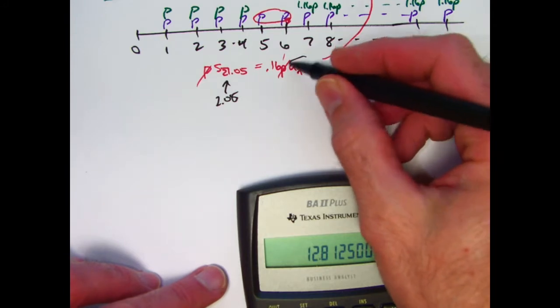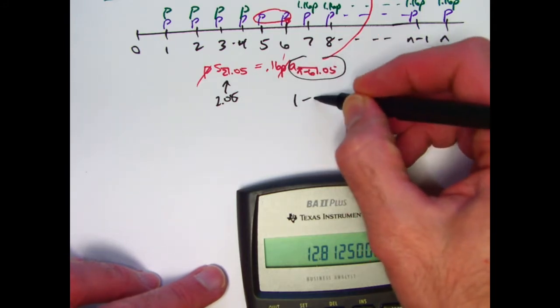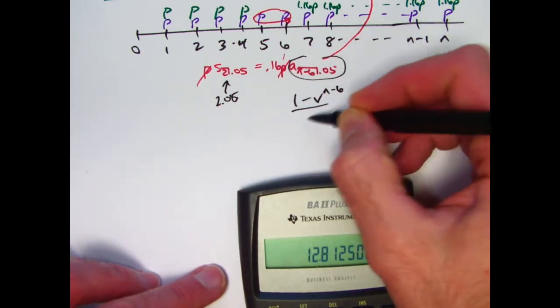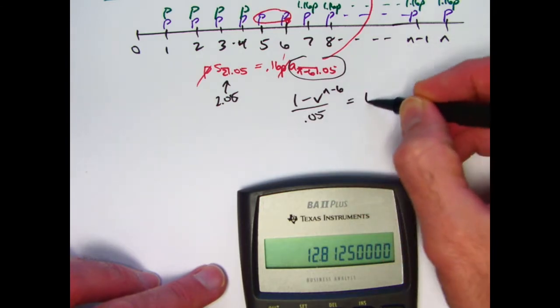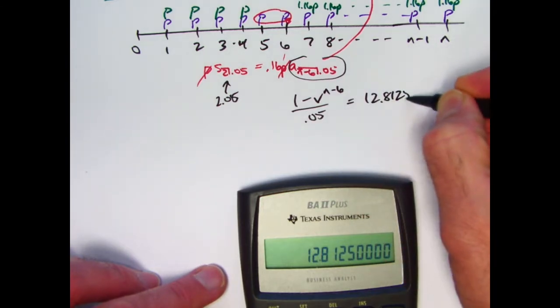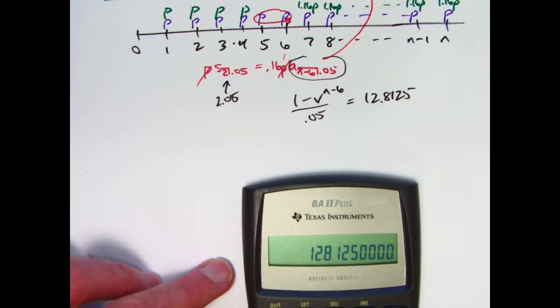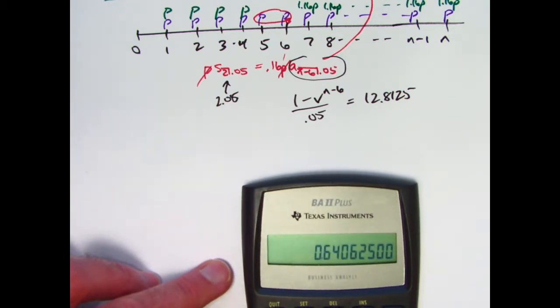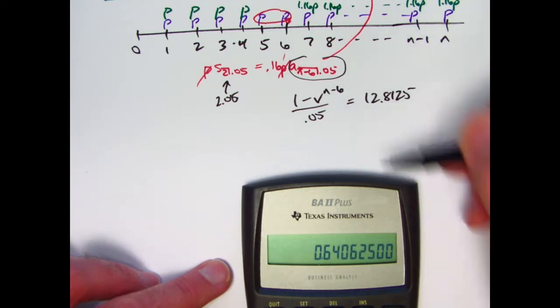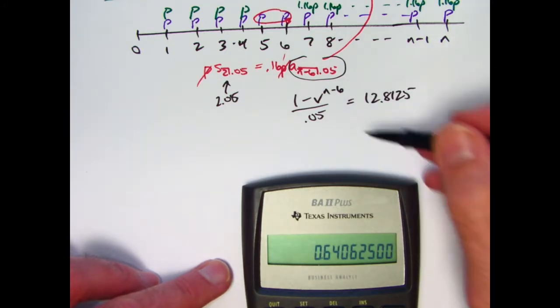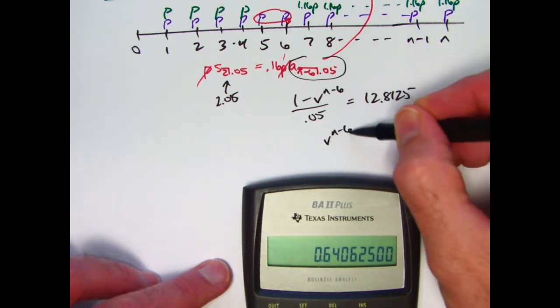And I could write, well, using the formula for this thing, I could write 1 minus v to the n minus 6 over 0.05 must be 12.8125. Multiply both sides by 0.05. 1 minus v to the n minus 6 should be that.